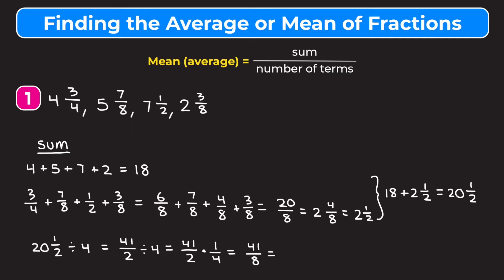So we get 41 over eight. And if we want to change this back into a mixed number, we can do that. Eight goes into 41 five times. Five times eight is 40. So we have one left over. So we get our average or our mean as five and one eighth.